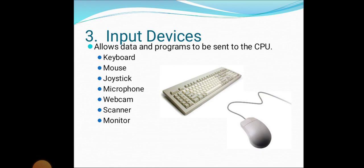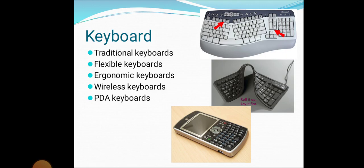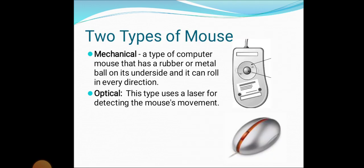Next, we are going to see what are the input devices and output devices. The input devices include keyboard, mouse, joystick, microphone, webcam, scanner, and monitor. For keyboards, there are traditional, flexible, ergonomic, wireless, and PDA keyboards. There are two types of mouse: mechanical and optical mouse.